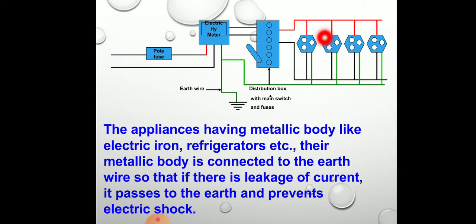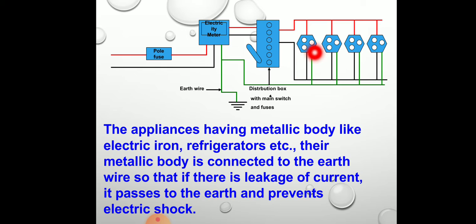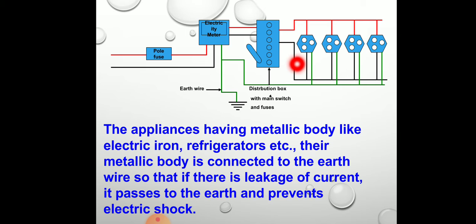You can see here the 3-pin socket: the earth wire is at the top, the red insulation live wire is on one side, and the neutral wire is on the other side. You can observe this at your home also — the upper socket hole is for the earth wire connection, one side is live, and the other side is neutral.